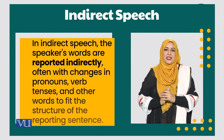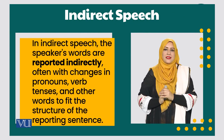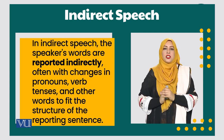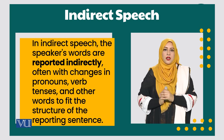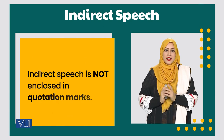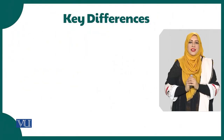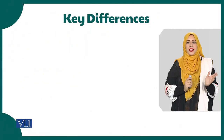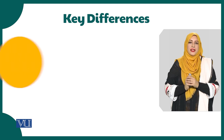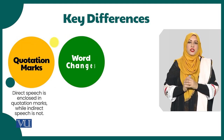Indirect speech is a speech in which we do not use the exact words of somebody. What we need to do is change the pronouns, verb, and other words to fit the reported part in the sentence. Indirect speech does not have quotation marks. So we can see that there is a key difference: direct speech is always under quotation marks while indirect speech does not have them.